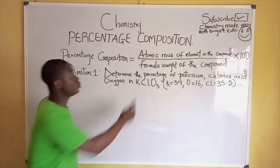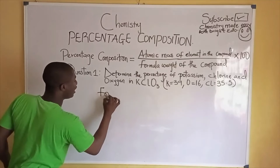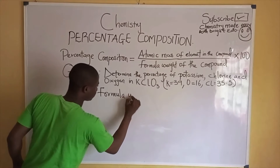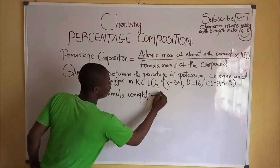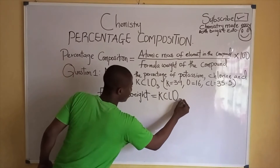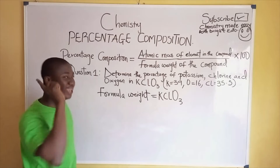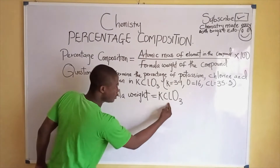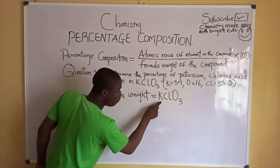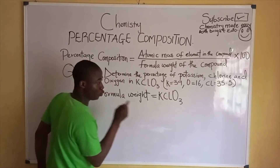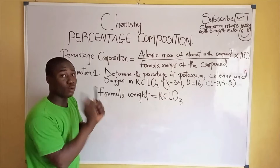First, we must calculate the formula weight of the compound. What is the formula weight of KClO₃? KClO₃ contains three elements: potassium, chlorine, and oxygen. We have one atom of potassium, one atom of chlorine, and three atoms of oxygen forming a molecule of KClO₃.